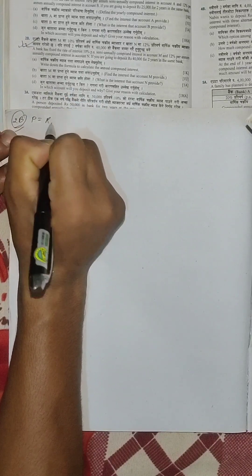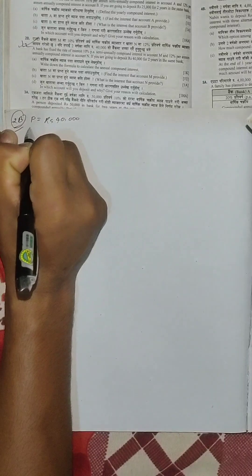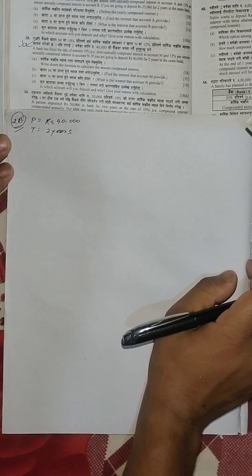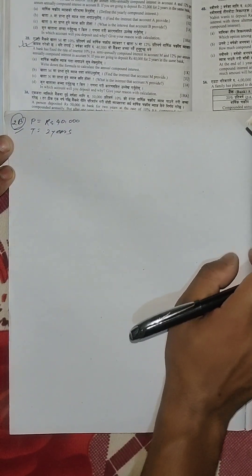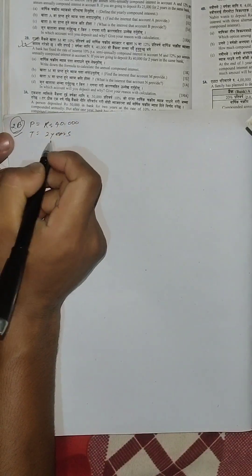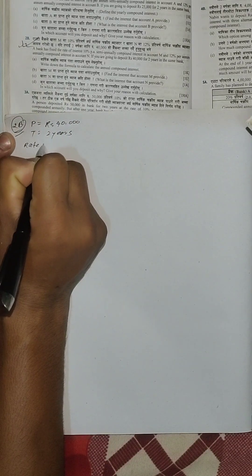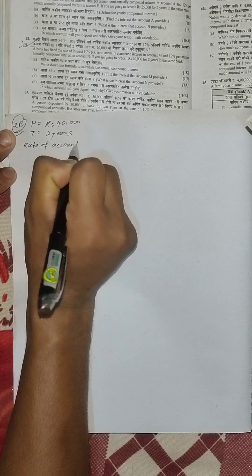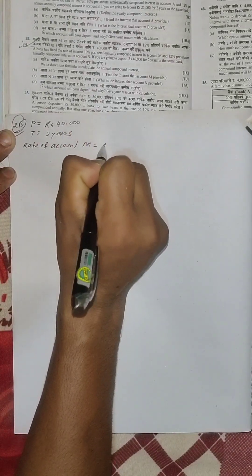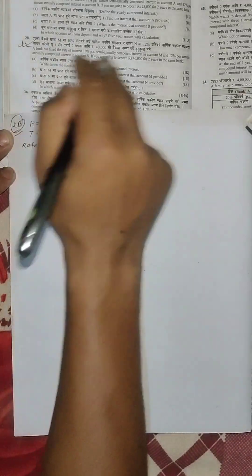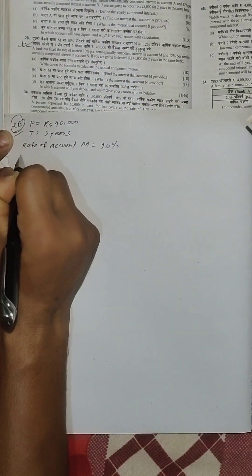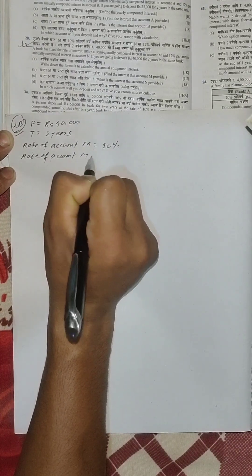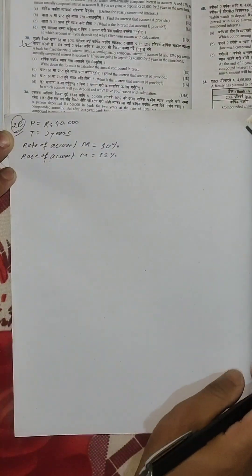The principle P is Rs.40,000 and T is equal to 2 years. Now I will start. The rate for account M is 10%, and the rate for account N is 12%.